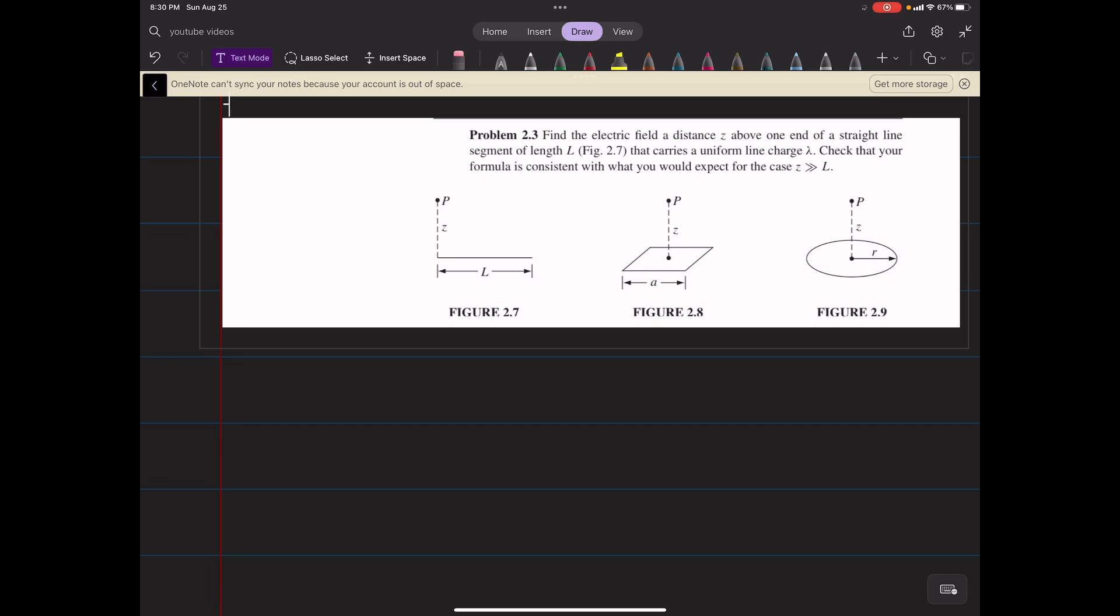This is problem 2.3 out of Griffith's Electrodynamics. In this problem we're trying to find the electric field a distance z above one end of a straight line segment that has uniform charge density lambda.